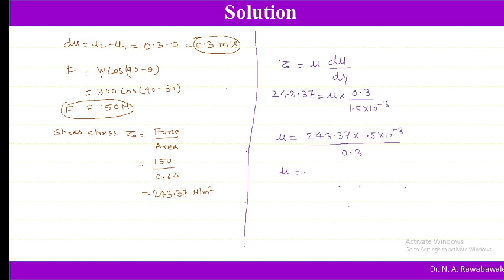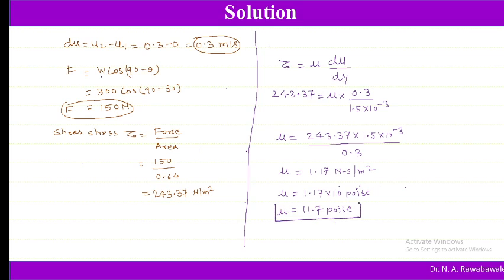So mu = 1.17 N·s/m², which multiplied by 10 gives 11.7 poise. This is the viscosity of the fluid between the two plates.